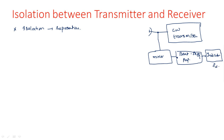What is the problem in this basic CW block diagram? During transmission, we transmit a signal with frequency f0. During reception, we receive a signal with frequency f0 plus or minus fd. The leakage signal also enters the receiver at f0.